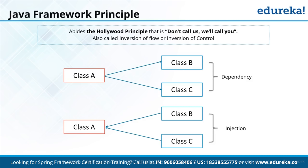The Java Framework principle abides by the Hollywood principle: 'Don't call us, we will call you.' This is basically inversion of control. Traditionally, as a developer, you create a class and then create an object. But inversion of control says do not worry about creating the object — frameworks will create objects for you. You just configure the objects.